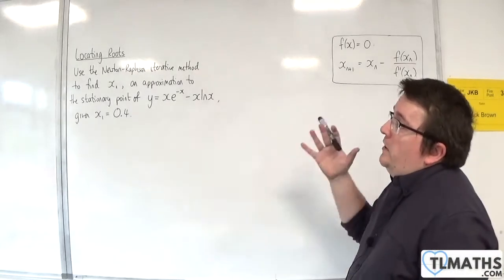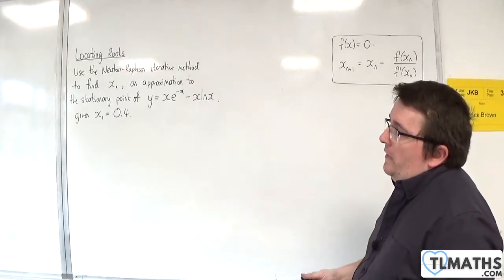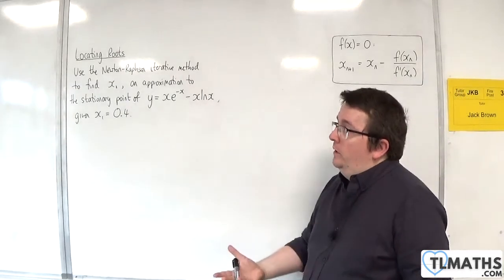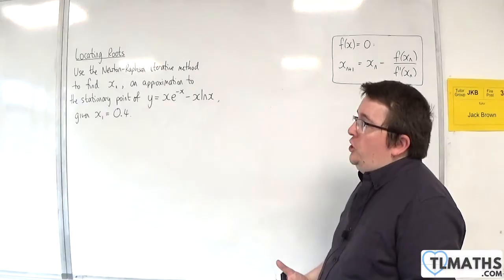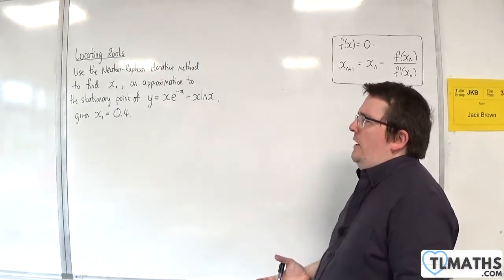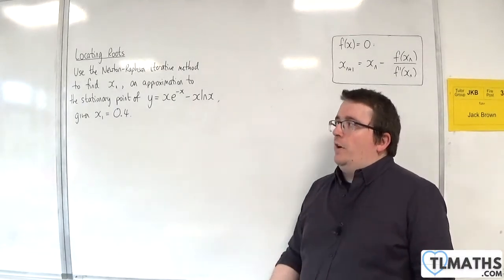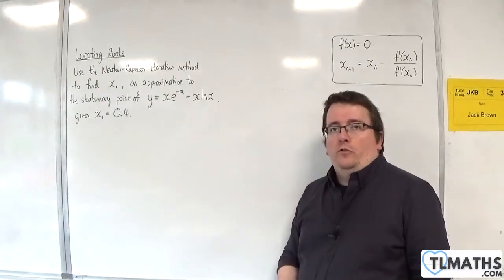So, in this problem, we're going to use the Newton-Raphson iterative method to find x2, an approximation to the stationary point of y equals xe to the minus x, take away x log x, given x1 is equal to 0.4.